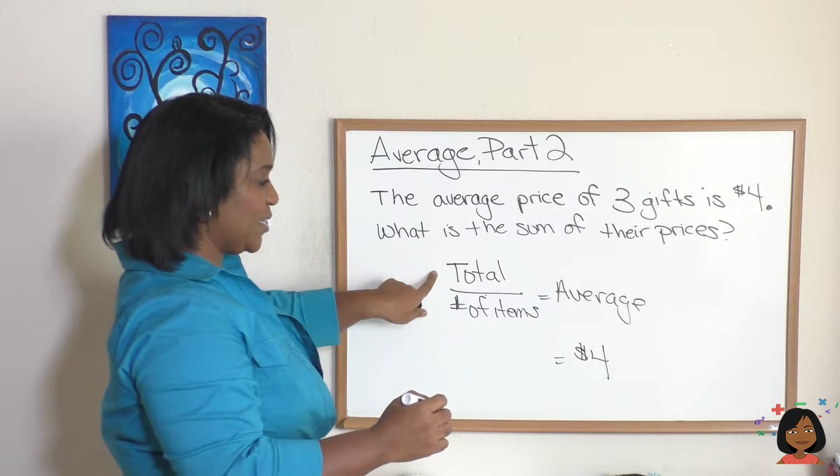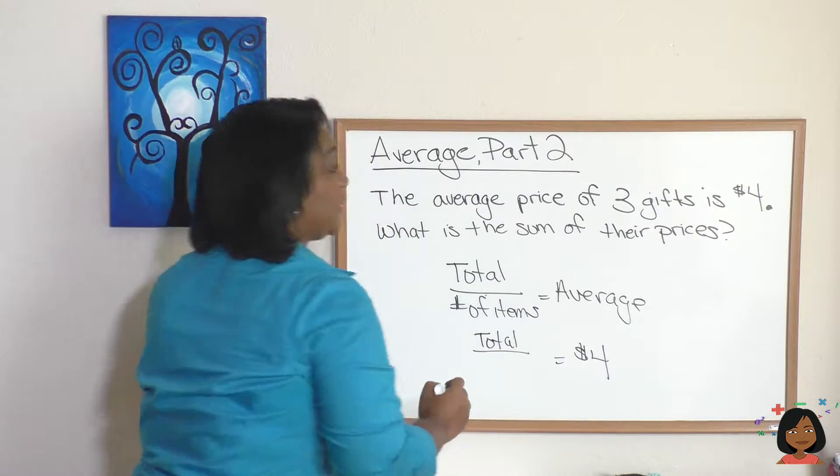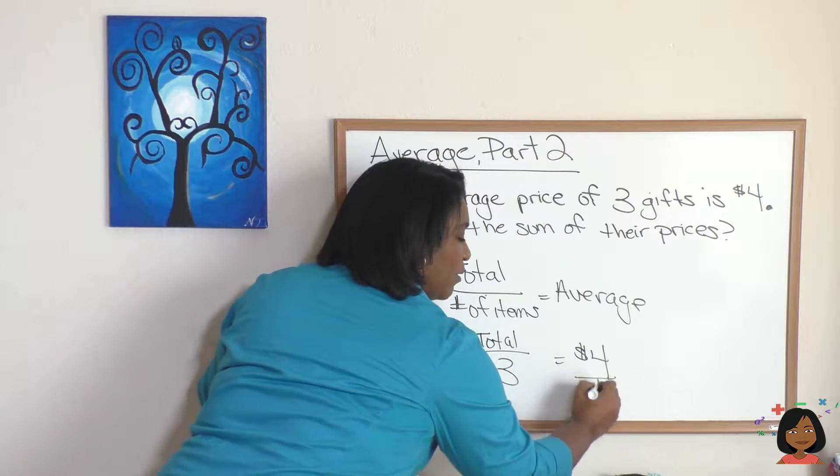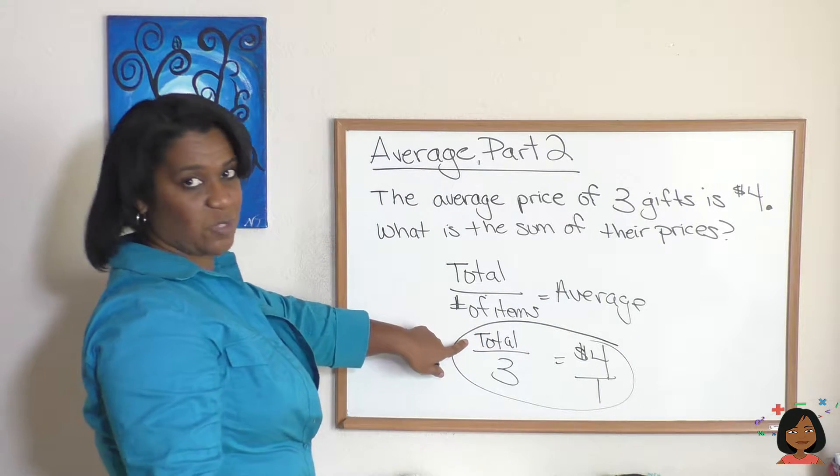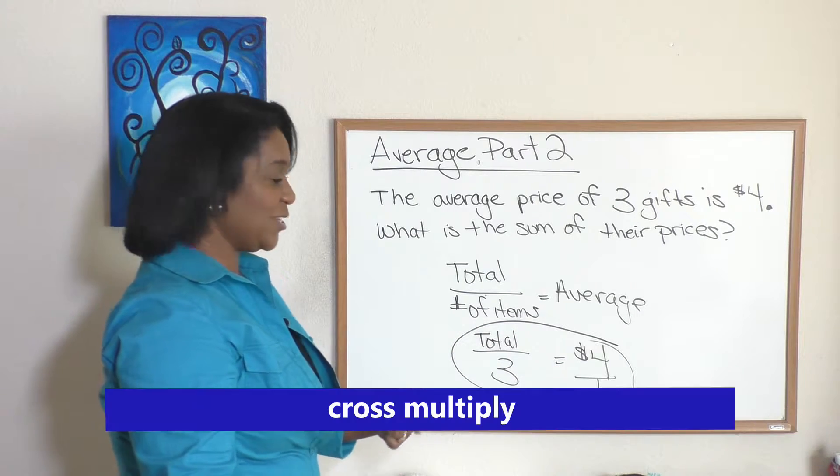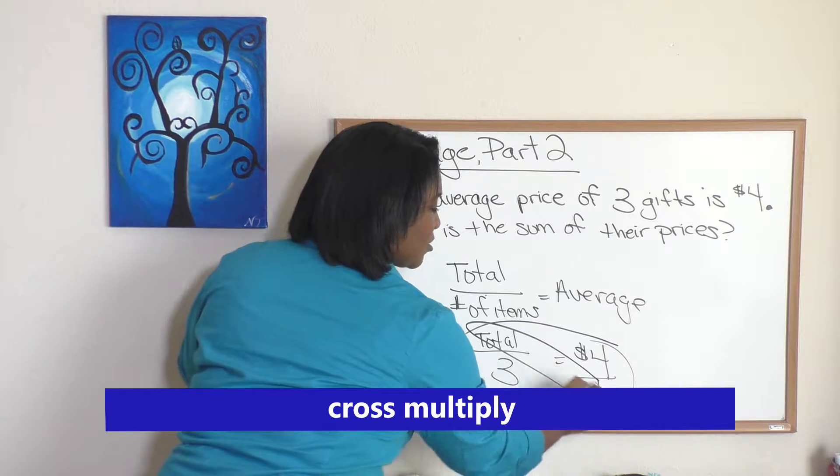What is the sum of their prices? So what we're missing is the total, but they told us how many gifts there were. There are three. Well, we can do this problem, can't we? All we're missing, imagine this was just a T, T over three equals four over one. We can do this.